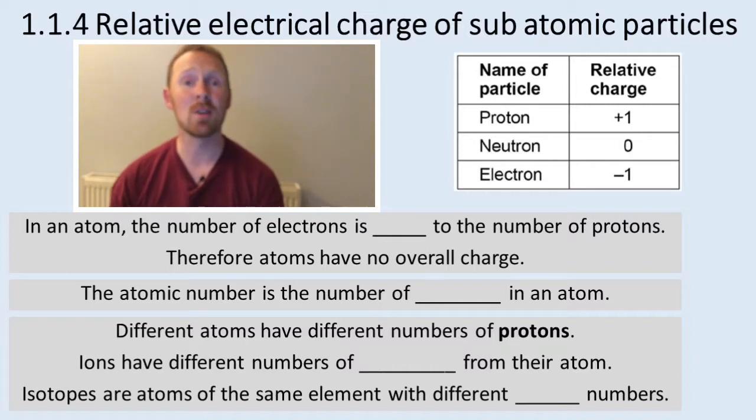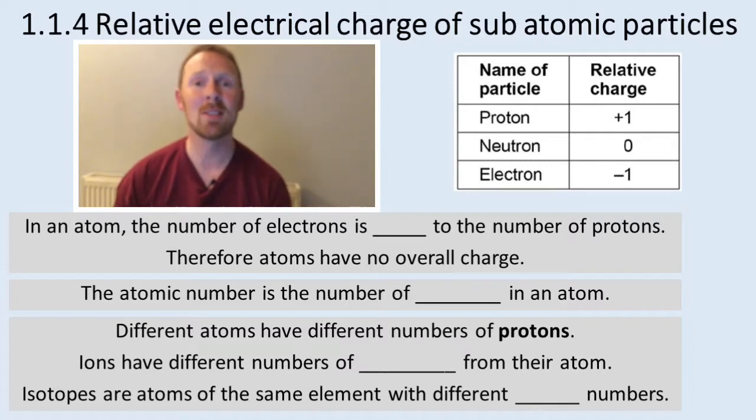which has a relative charge of plus one and is found in the nucleus. There's the neutron, which is found in the nucleus, but it has no relative charge.